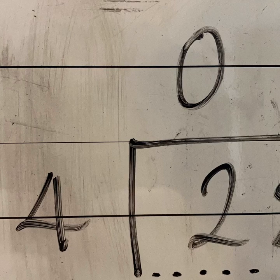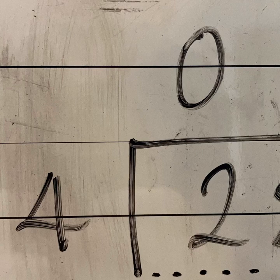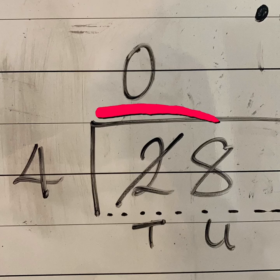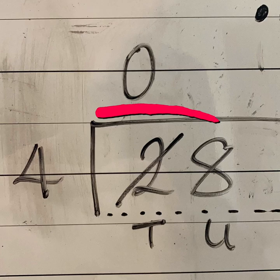If the number on the outside of the bus stop or the chocolate bar, if the number on the outside is bigger than the number on the inside, you can't do it. So I've put my 0 above my tens column. So this is what we've got so far. 4 doesn't fit into 2, so it's 0 that goes up in the tens column. But we still need to use that 2 that we've crossed out.